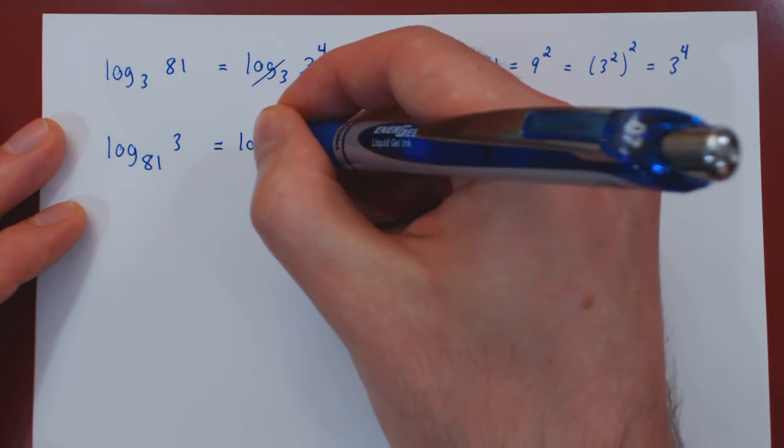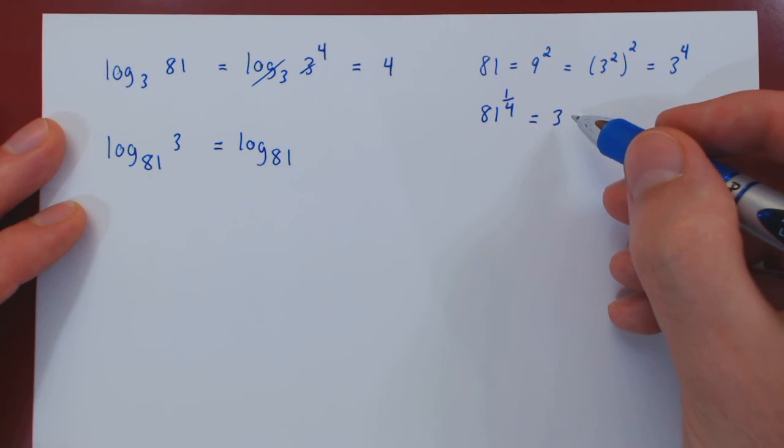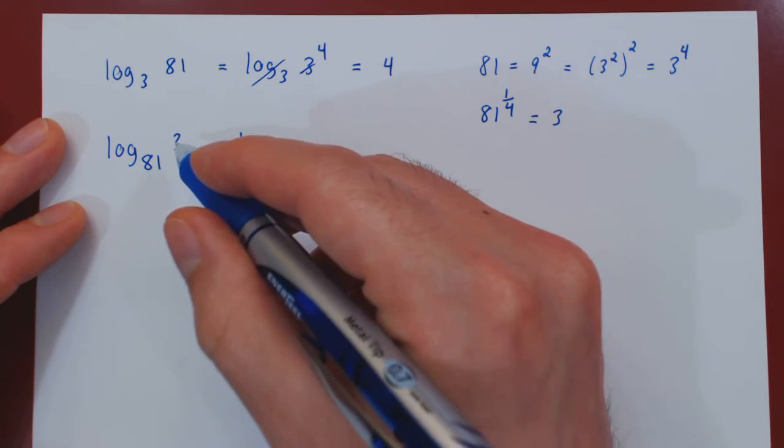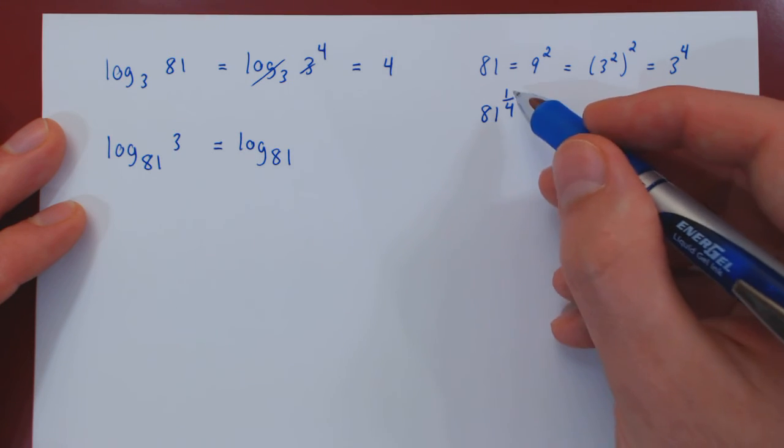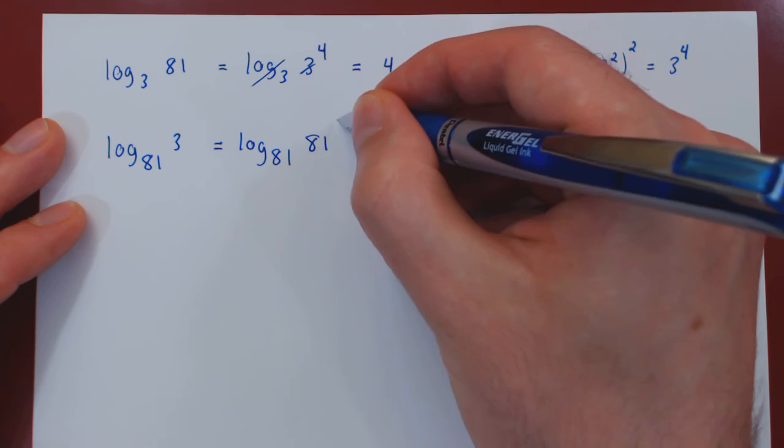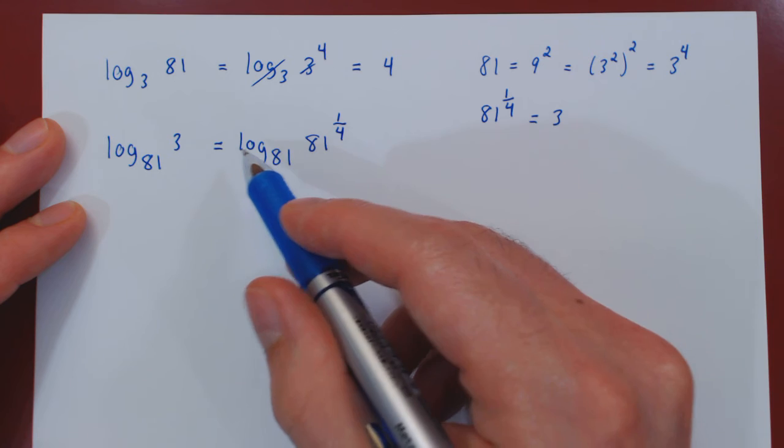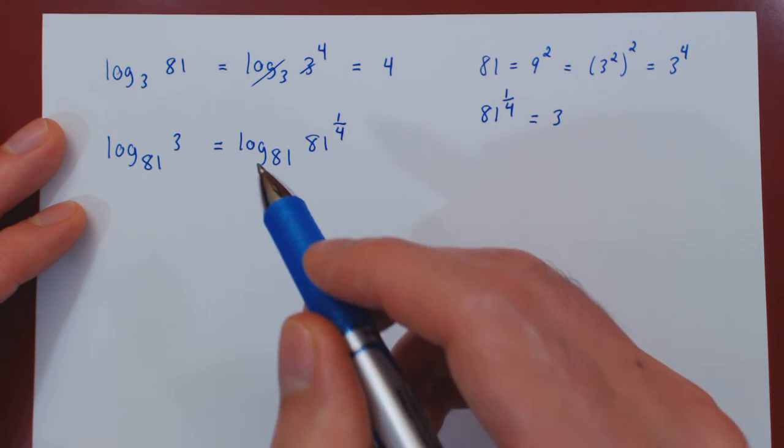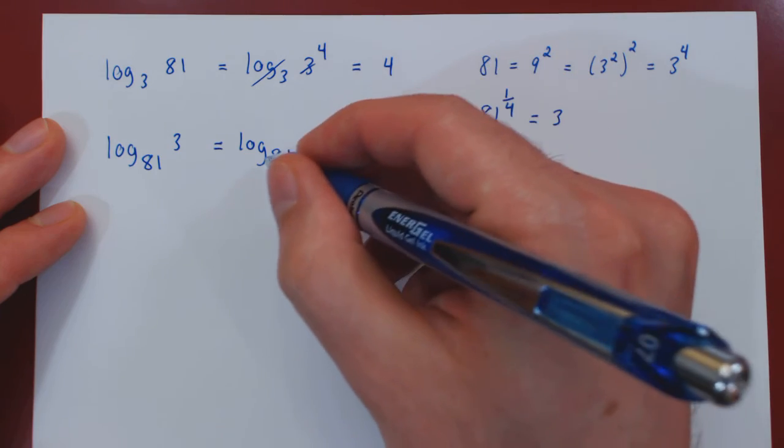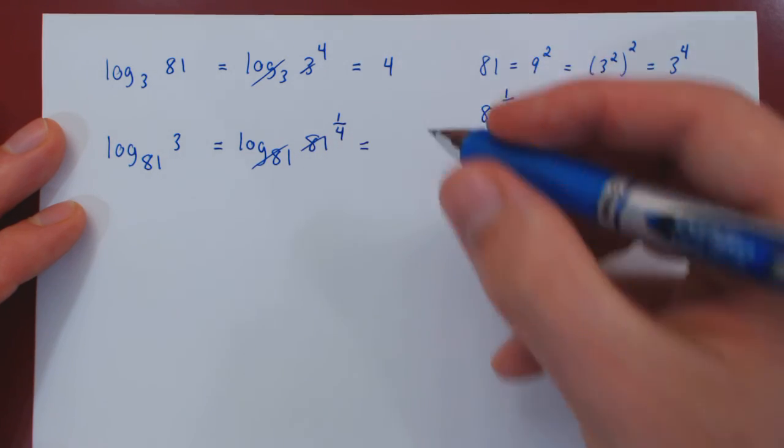So we now have the logarithm base 81 of 3, and again, replacing 3 by the 4th root of 81. And again, by definition, the logarithm base 81 is the inverse function of the exponential function base 81. So these two cancel, and we're left with the exponent 1 over 4.